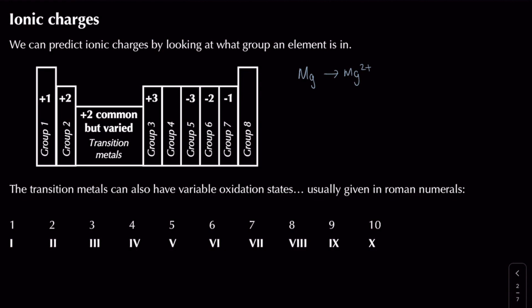Looking at groups 5, 6 and 7 - they're slightly different. Taking oxygen as an example: it has six electrons in its outer shell because it's in group 6, and rather than losing six electrons, it's going to gain two to form a full octet. So if it gains two electrons, the overall charge becomes 2 minus, giving you an oxide ion. That covers predicting the charge of an ion by looking at what group it's in.